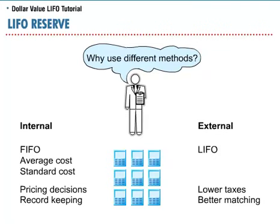First, companies often base their pricing decisions on a FIFO, average, or standard cost assumption rather than a LIFO basis. Second, record-keeping on some other basis is easier because the LIFO assumption usually does not approximate the physical flow of the product — that is, usually the last materials put in inventory is not the first inventory out. A company may also be motivated to use LIFO for external reporting because it often results in a lower tax bill and better matching of revenues and expenses.